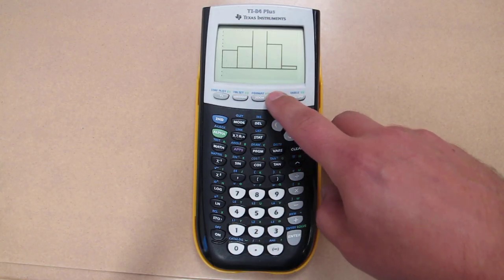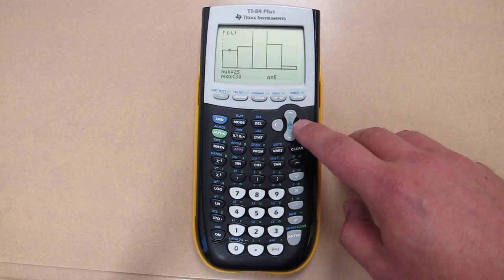Now when we push trace, we see our classes are a little bit better, 25 up to 30, 30 up to 35.